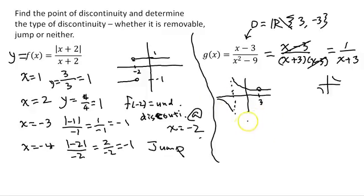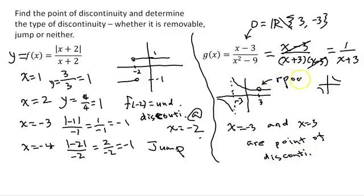That's the graph of g(x). That means there are two discontinuous points: x equals negative 3 and x equals 3 are points of discontinuity. However, this one is removable - it's a removable point of discontinuity. Whereas this is neither. You can't say whether it's removable or a jump discontinuity. If one side goes to infinity or negative infinity, it's just a discontinuous point - neither jump nor removable.